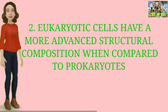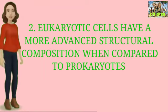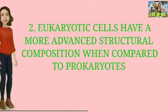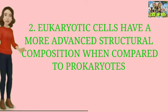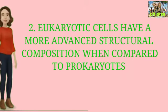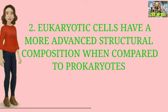Second character: eukaryotic cells have a more advanced structural composition when compared to prokaryotes. The structure remains at a high level — advanced means high-level arrangement. Their structural composition is at a higher level compared to prokaryotes.